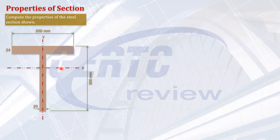We have here a steel section where the flange width is 200 mm, the flange thickness is 24 mm, the overall depth is 300 mm, and the thickness of the web is 20 mm.